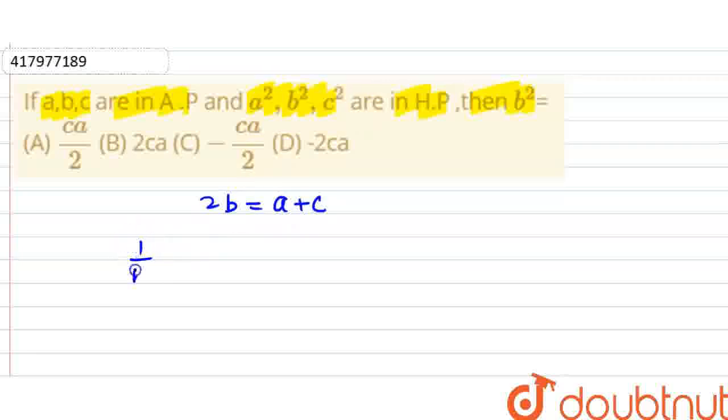Here, we will put one upon B square minus one upon A square. Then, it equals one upon C square minus one upon B square. This equals one upon A square, C square. Here, you have an AP series.